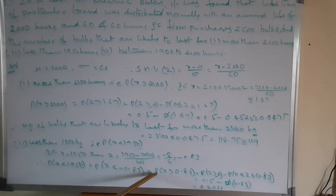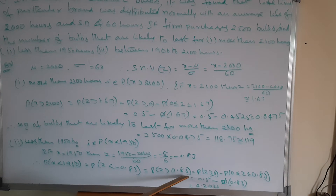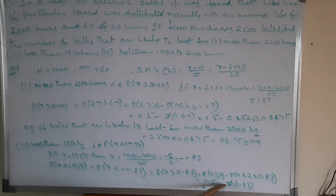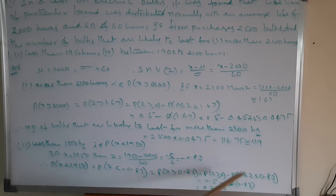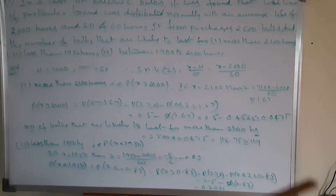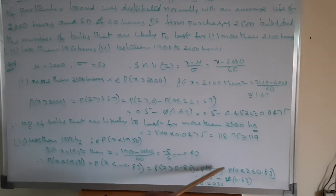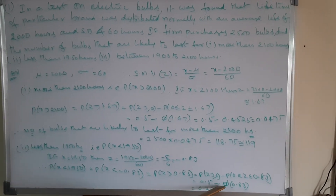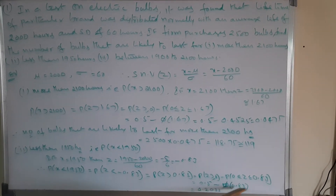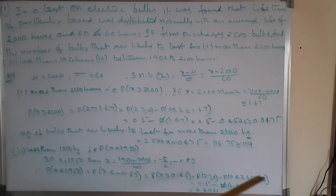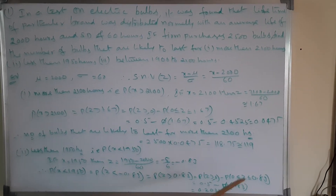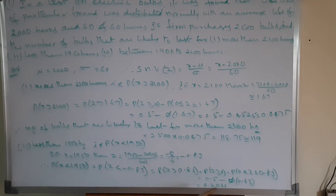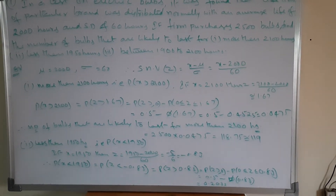By symmetry, P(z < −0.83) equals P(z > 0.83), which equals P(z ≥ 0) minus P(0 ≤ z ≤ 0.83). P(z ≥ 0) by standard result is 0.5, and from the normal distribution table P(0.83) is looked up; subtracting gives 0.2033.